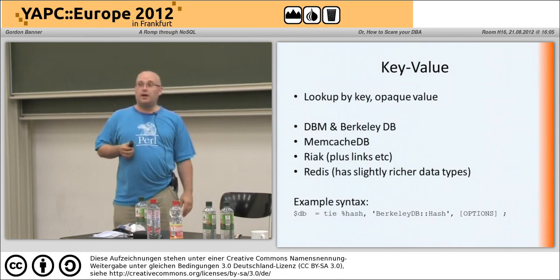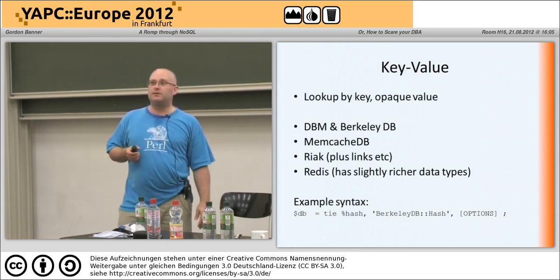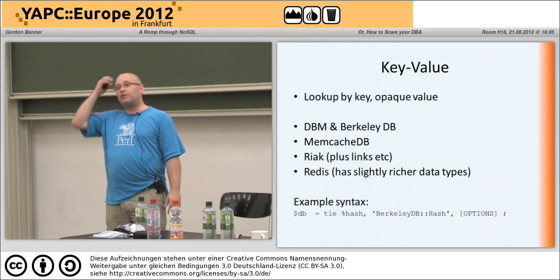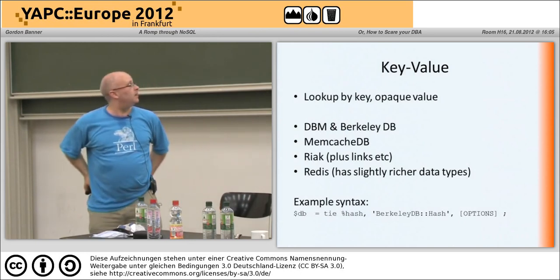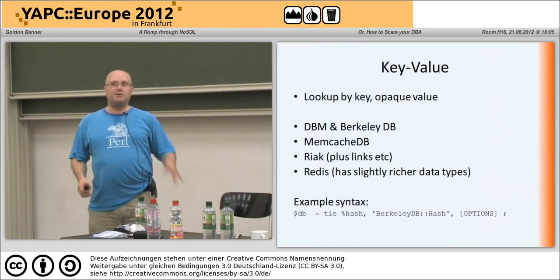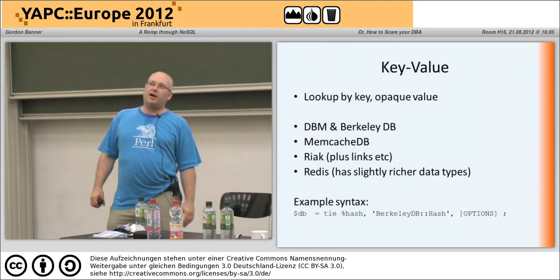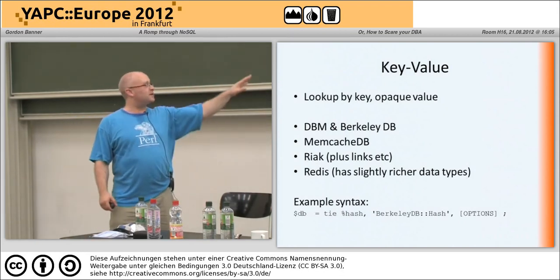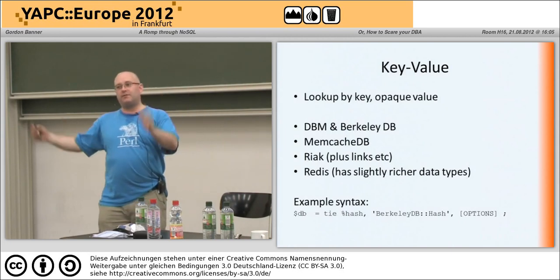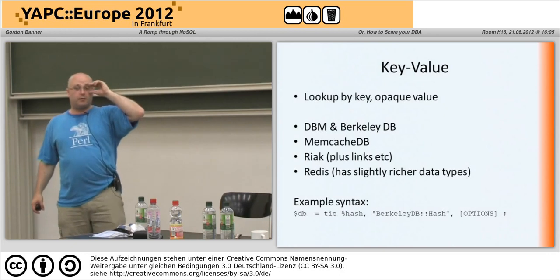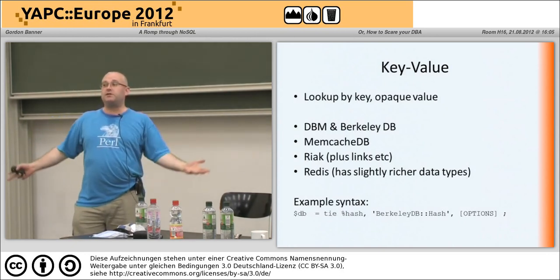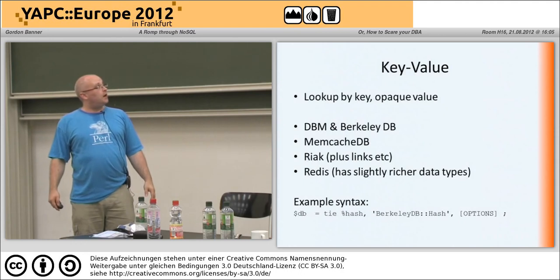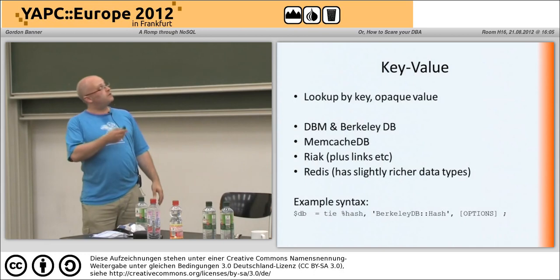Key-value stores are actually quite an old concept — Berkeley DB, DBMs — they've been around for a long time. People don't tend to mention them in this company, but they are exactly the same stuff. The model is very simple: it's like a hash — you've got a key, you pick up a value. Memcached you've probably heard of as a caching solution; there's a DB version which basically just makes it persistent. Riak is basically key-value, but slightly richer, and likewise Redis.